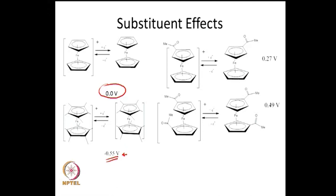If you do a substitution with an electron-withdrawing group such as an acetyl group, it becomes easier to add the electron. This seems slightly contradictory to what was said earlier — namely that the electron is completely localized on the iron in a non-bonding orbital, which would require no changes in the electrode potential upon adding electron-withdrawing groups. Nevertheless, there are changes, but all these changes happen in a reversible fashion. Acetyl ferrocene always has a potential of 0.27 volts with respect to the ferricinium/ferrocene couple.